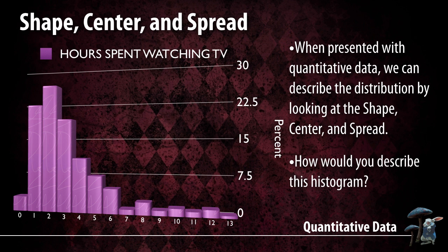So in this case you have a histogram. This was the question about how many hours a week do you watch television on average. What we have here is essentially a histogram shape. You have a huge group of numbers around the area from one to four, and then it kind of trails off upwards towards 13. The question is: how do we describe this?